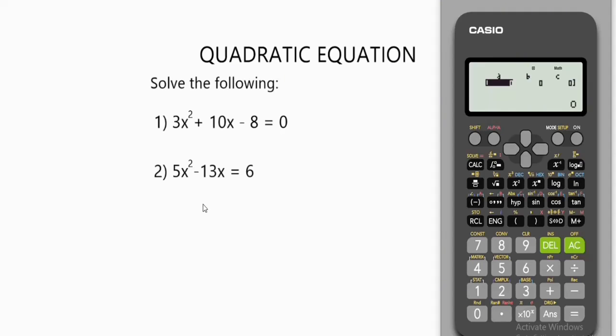Our a here is 5x². What's the coefficient of 5x²? It's 5. Press equals. Then we have -13x. What's the coefficient of -13x, which is -13, which will be our b? Input it.